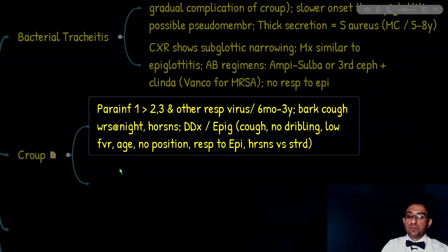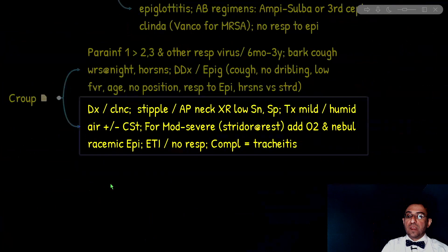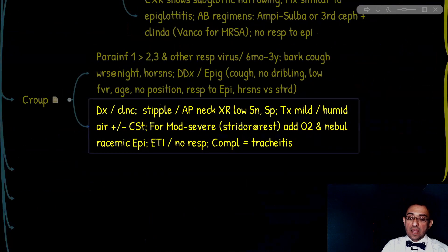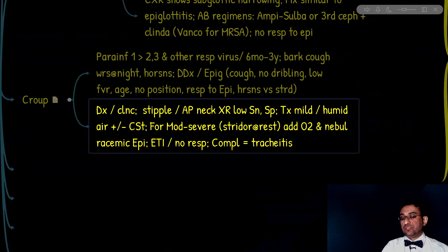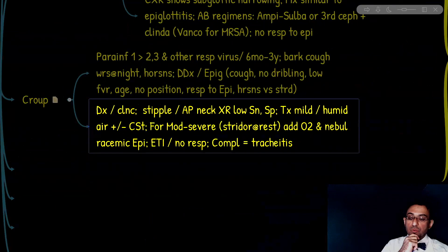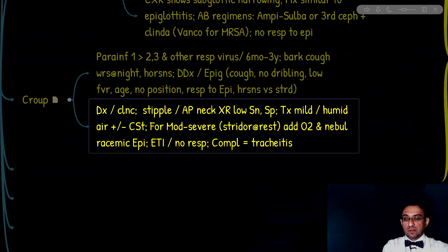True or false: diagnosis of croup requires x-ray confirmation. That is false — diagnosis is mainly clinical. However, x-ray can show the steeple sign indicating subglottic narrowing. We do not use lateral x-ray; we use anteroposterior x-ray for subglottic stenosis assessment. The steeple sign does not have high sensitivity or specificity for croup because it is a common finding in all conditions associated with subglottic stenosis.